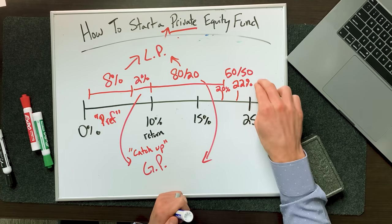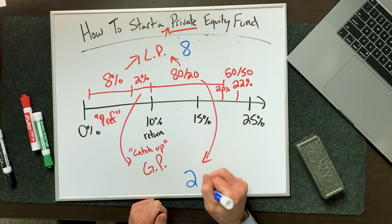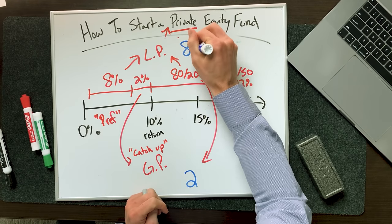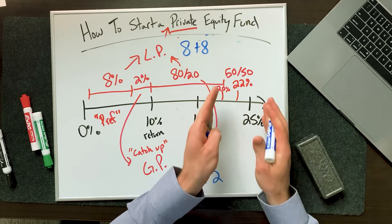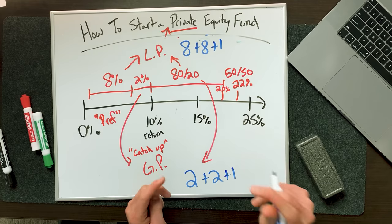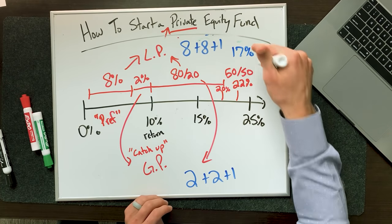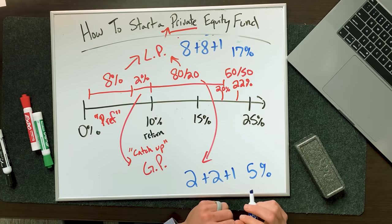Back to our example: if we had a 22% return, the first 8% goes to the limited partners, the next 2% comes to me as catch-up, from 10% to 20% we split 80/20 — so that's another 8% up to investors, another 2% to me — and from 20% to 22% we split 50/50, so that's one percent to investors and one percent to me. At the end of the day in this example, my investors would take home a 17% cash-on-cash return and I as the fund manager would make 5%.